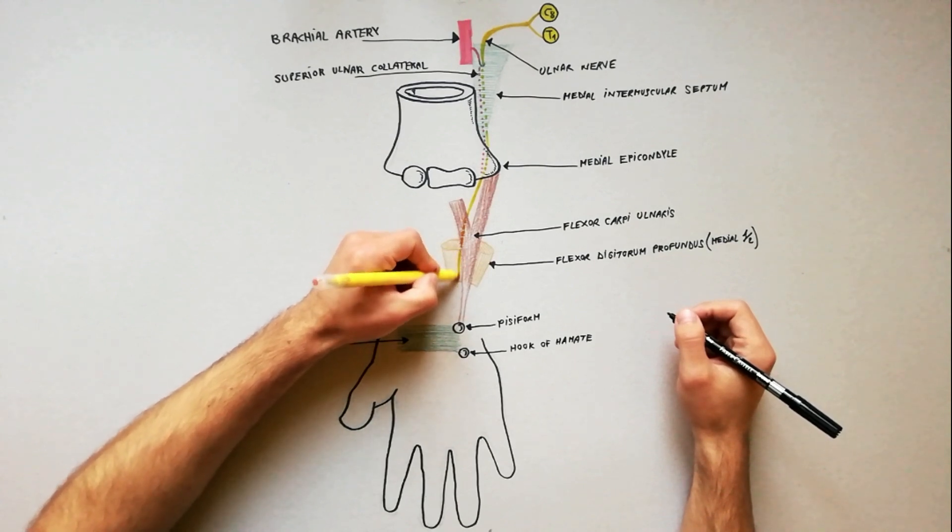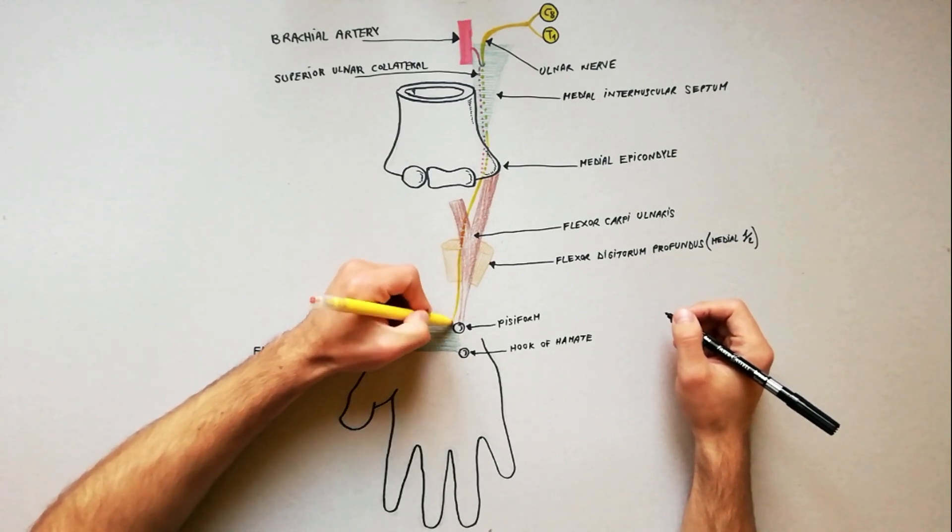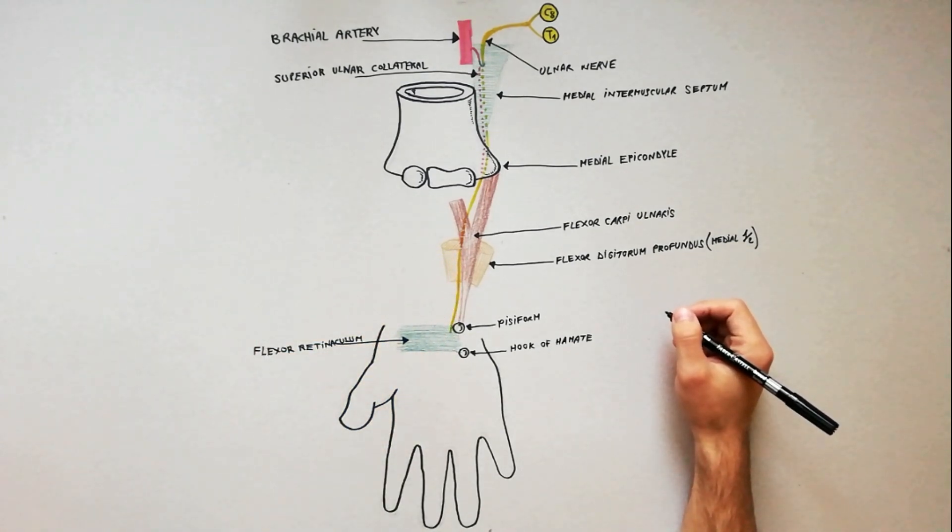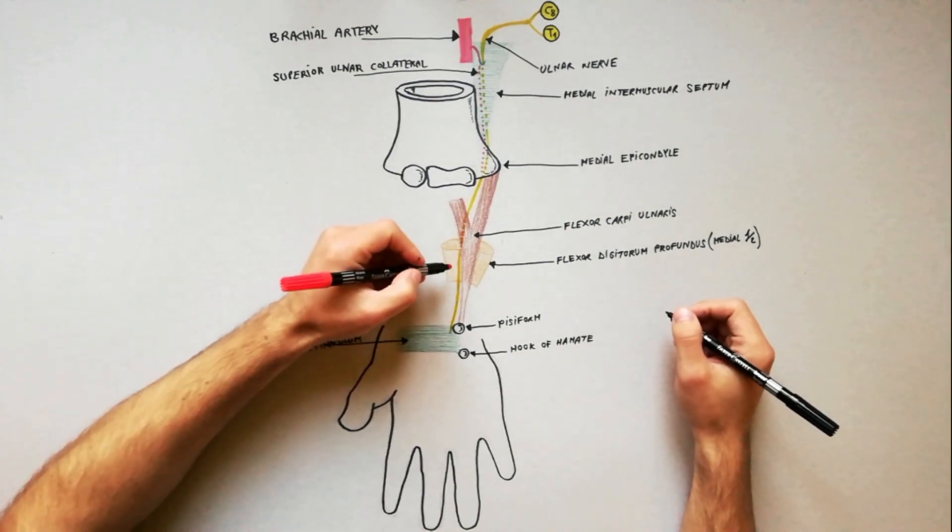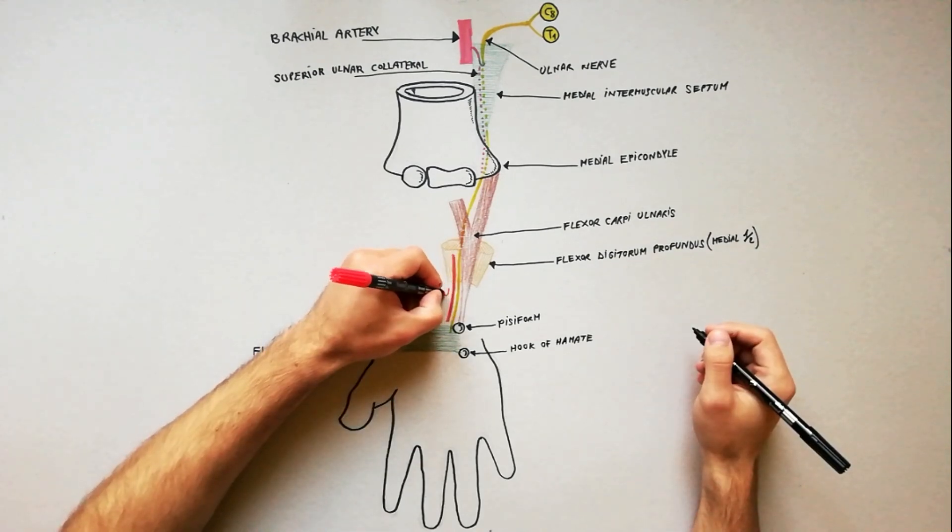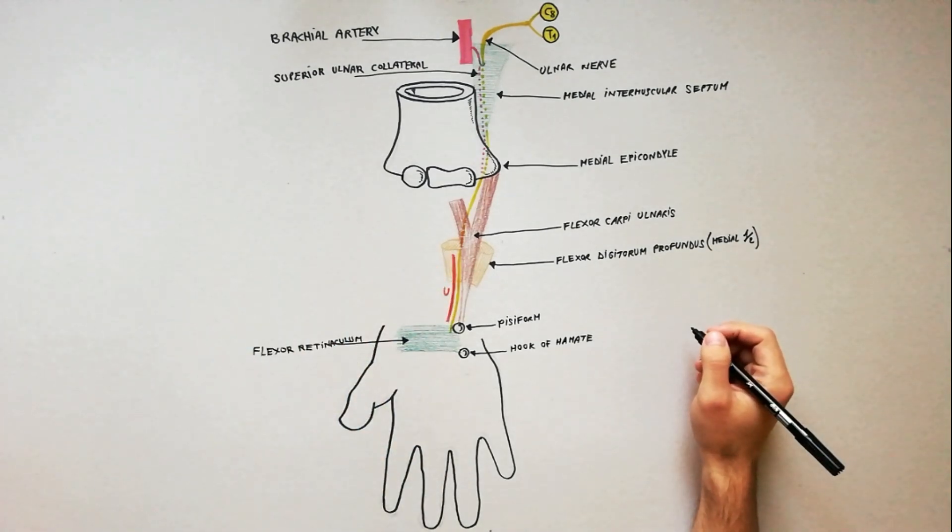In the lower two-thirds of the forearm, it becomes superficial and lies lateral to the flexor carpi ulnaris. In this part of its course, the ulnar nerve and ulnar artery descend together, the artery being on the lateral side of the nerve.